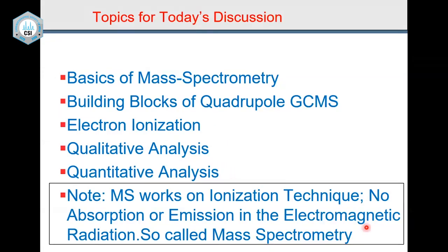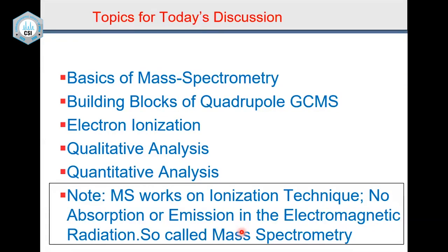As mentioned on Monday, MS works on an ionization technique — it is a destructive technique where your compound is ionized, with no absorption or emission of electromagnetic radiation. So we call it mass spectrometry and not mass spectroscopy. If you want to make a good impression, always use mass spectrometry; mass spectroscopy is understood but may not be the correct nomenclature.